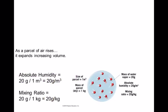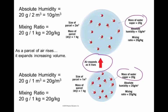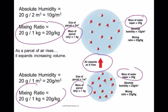Now let's let this chunk of air rise and see what happens. It still has the same water vapor and the same mass of dry air. So the mixing ratio is unchanged — 20 grams of water vapor per kilogram of dry air. What changed is the absolute humidity: now we're dividing by two cubic meters instead of one, so it drops from 20 to 10 grams per cubic meter.